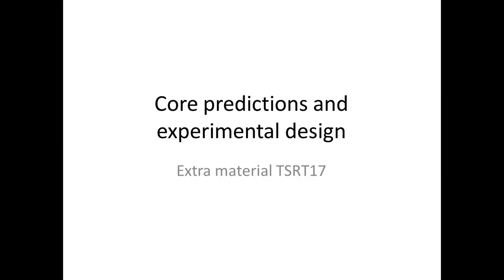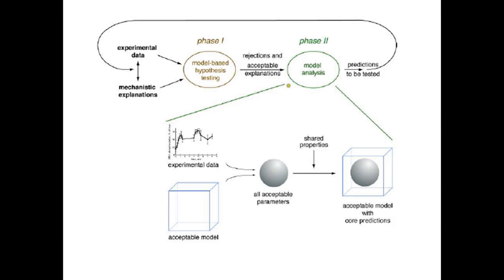Hello again, this is Gunnar who continues on explaining these core predictions and closing the loop. So using these core predictions to do an experimental design. This has to do with the very end of the course and the very end of this modeling cycle, which started out with some experimental data and some mechanistic explanations. We rejected some of these explanations already here in Phase 1, and some we did not reject, and then we went on to do a core prediction analysis.